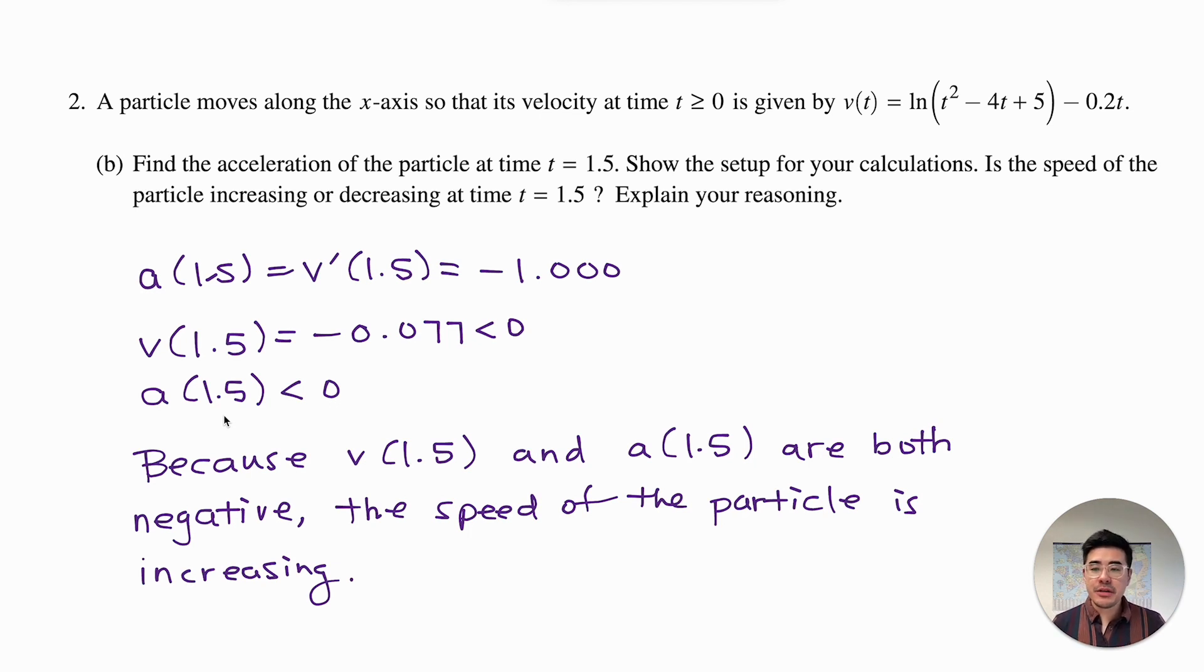So for you to get full credit on this question, you need to show that you're calculating v of 1.5 and a of 1.5. Otherwise, you're not showing your work, right? Because anybody can say that they have the same sign. And then you would also need a sentence using complete and proper grammar that says that velocity and acceleration either both are negative or both have the same sign. What a lot of students do wrong is they just calculate the acceleration and see that it's negative, but that's not enough to get you any credit on this question.